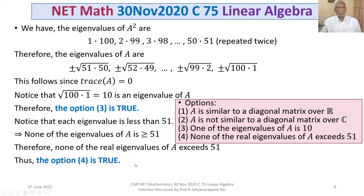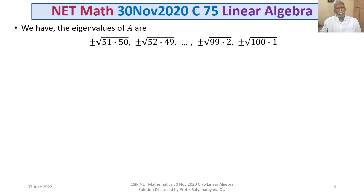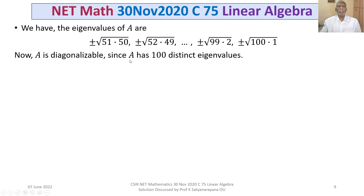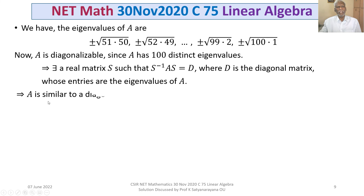Options 3 and 4 are both true. Since A has 100 distinct eigenvalues and is of order 100, A is diagonalizable. There exists a real matrix S such that S⁻¹AS = D, where D is the diagonal matrix whose entries are the eigenvalues of A. This means A is similar to a diagonal matrix over ℝ, so option 1 is true.